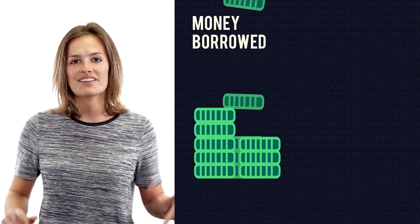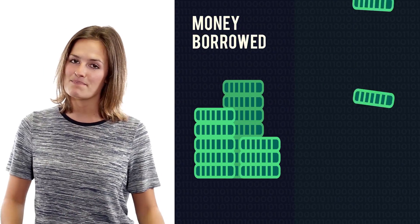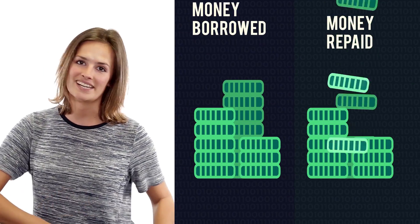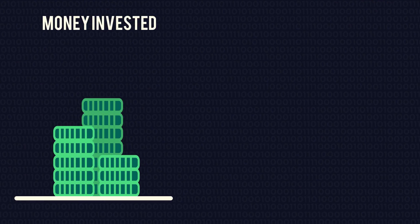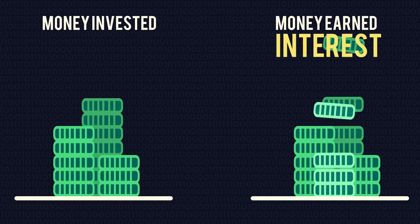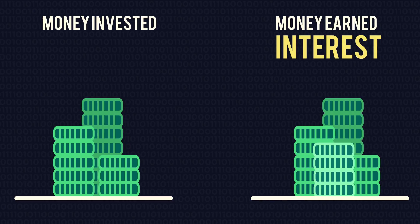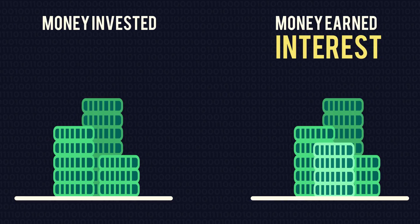Interest is the amount charged by a lender to a borrower. It means that if you borrow some money from a bank, you're going to have to pay back more money than you borrowed. Equally, if you have a savings account and deposit some money, the bank will pay you interest as a sort of thank you for saving with them, as you are effectively loaning the money.